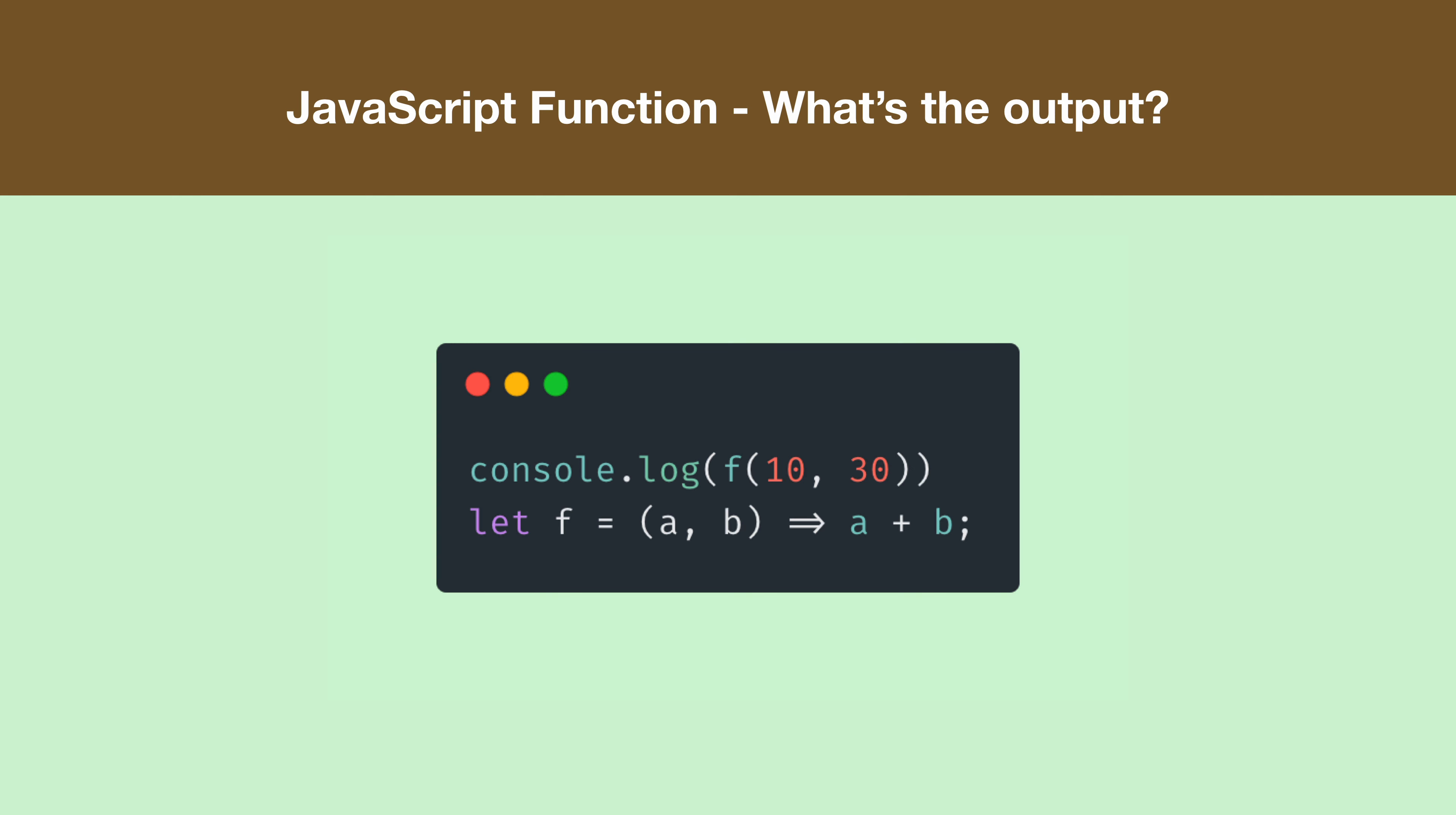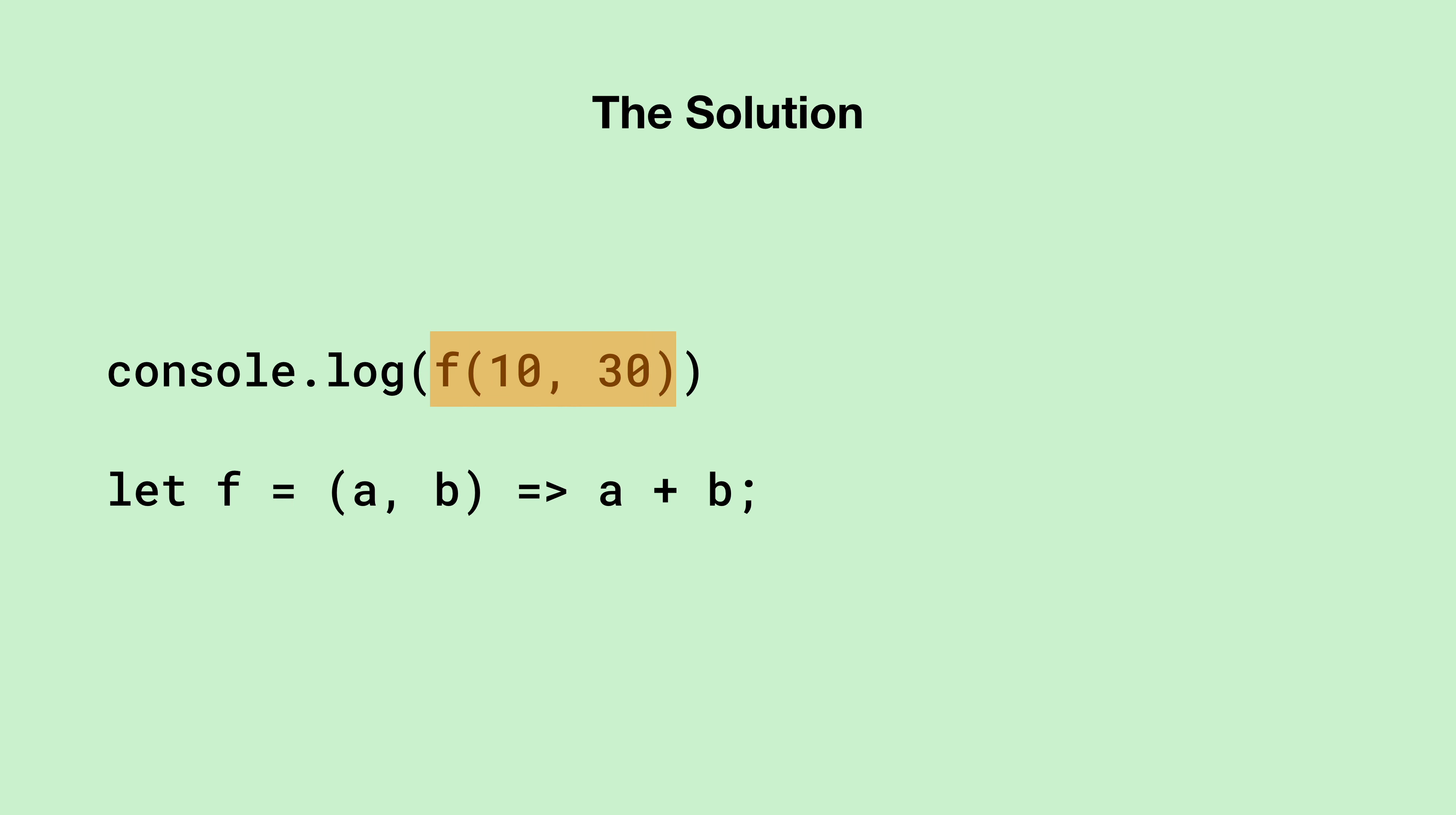Let's work together to find the right answer. In the first line, we are calling function f even before it was declared. It is in the next line that we've declared a variable called f which refers to an arrow function. This arrow function has two parameters a and b and returns the addition of a and b.